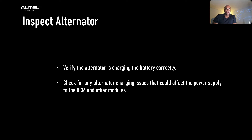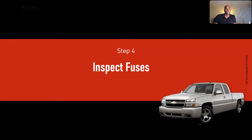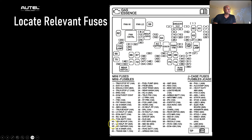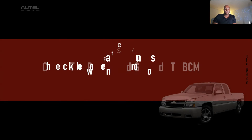Next, inspect the fuses. A blown fuse can disrupt power supply to the BCM, leading to communication failures. You can see here a layout of where all the fuses are. Use a test light or a multimeter to check for continuity. If you find any bad fuses, replace them, and then move on to the next procedure: checking power and grounds to the BCM.